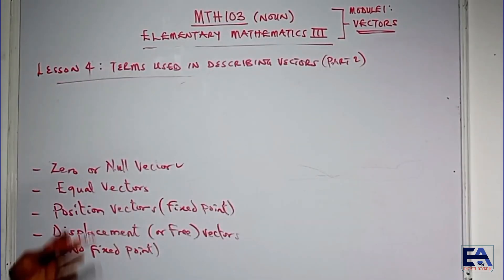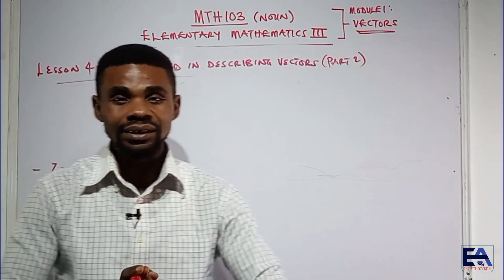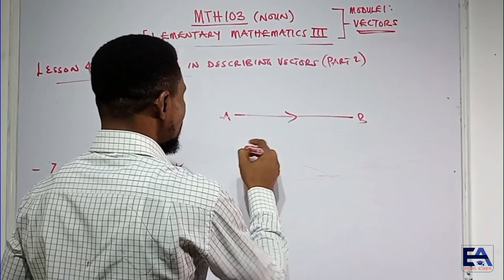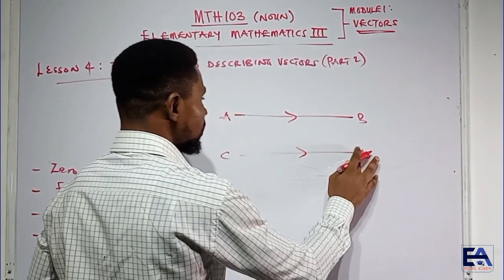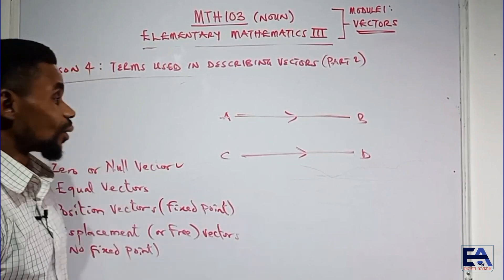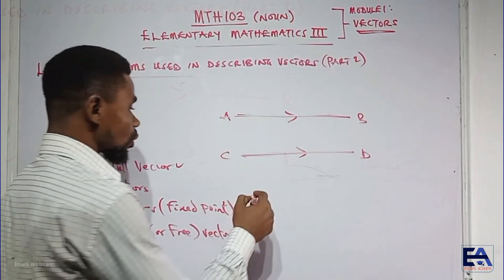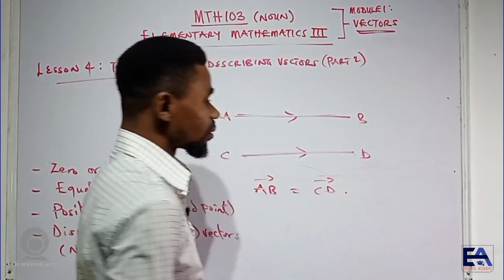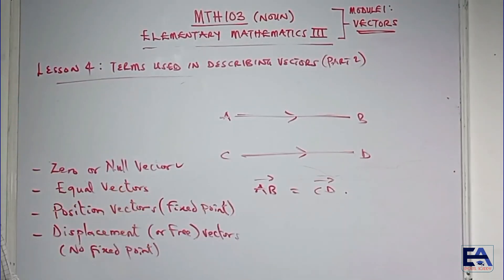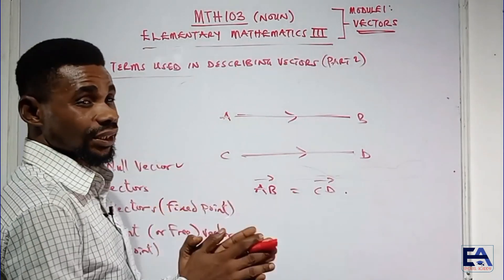Equal vectors are two vectors that have exactly the same magnitude. If I have vector AB and vector CD, and they are equal in length — because the length of a vector represents its magnitude graphically — then we say vector AB is equal to vector CD. When they are equal but opposite, and you find the resultant, that leads to the zero vector.